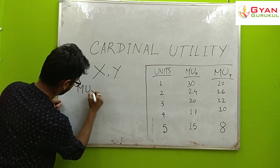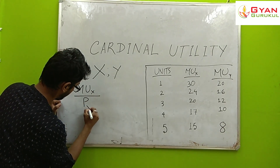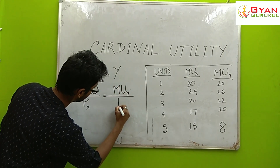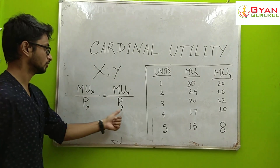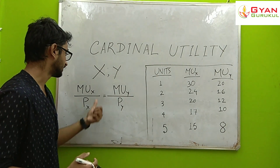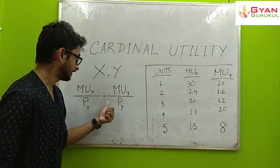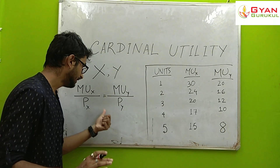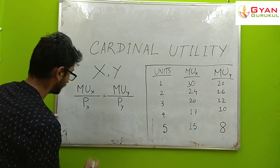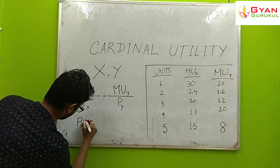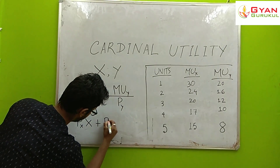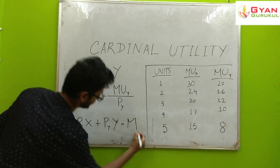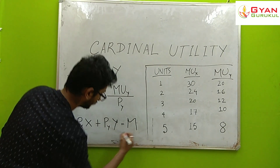When there are two commodities, X and Y, the equilibrium condition becomes: Marginal Utility of X divided by Price of X is equal to Marginal Utility of Y divided by Price of Y. This must be satisfied along with the budget constraint, which is: Price of X multiplied by quantity of X plus Price of Y multiplied by quantity of Y equals the consumer's budget M.